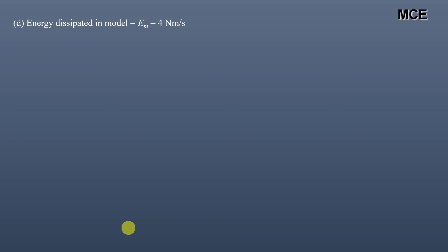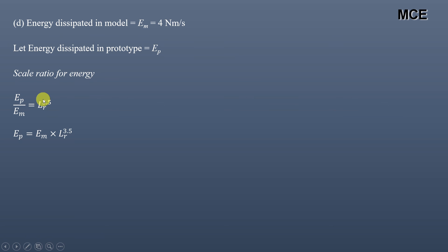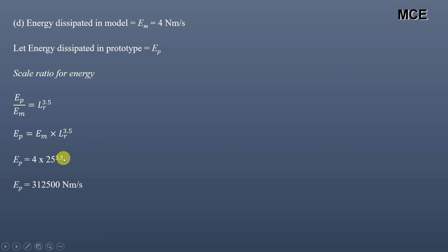Next, the energy dissipated in the model per second is 4 newton-meters per second. Let us assume the energy dissipated in the prototype is Ep. The scale ratio for energy in Froude's model law is Ep/Em = Lr raised to the power 3.5. So the energy dissipated in the prototype equals the energy in the model times Lr^3.5, which is 4 × 25^3.5 = 312,500 newton-meters per second.